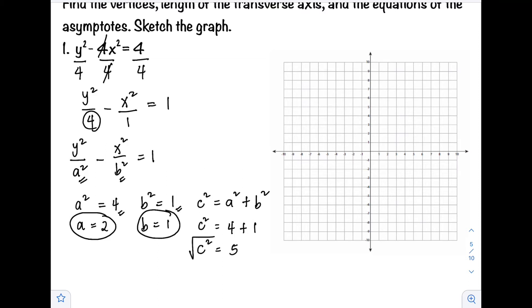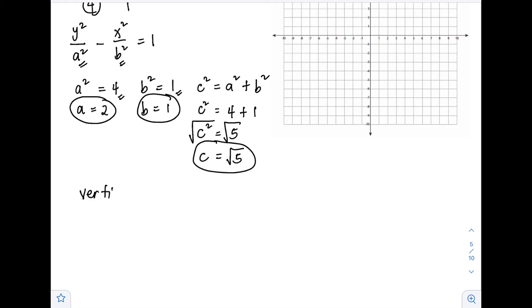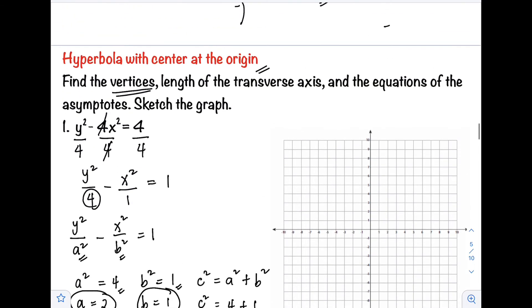Next, identify what we're asked to find in the directions. We are asked to find the vertices. To get the vertices, since we know our hyperbola opens vertically, the formula is (0, ±a). So we have two vertices: (0, 2) and (0, -2).